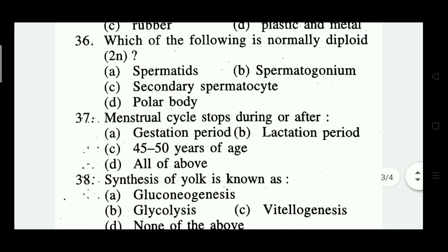Question number thirty-six: which of the following is normally diploid? Options: spermatids, spermatogonium, secondary spermatocyte, polar body. The right answer is spermatogonium — option B.